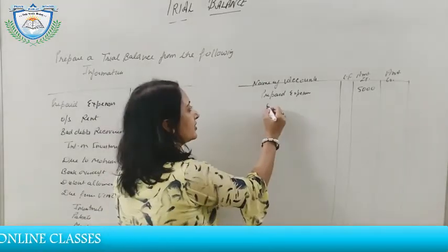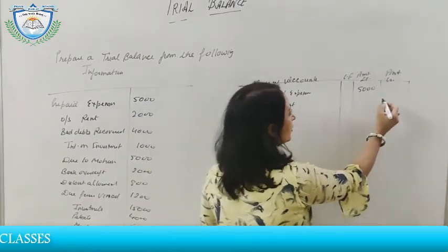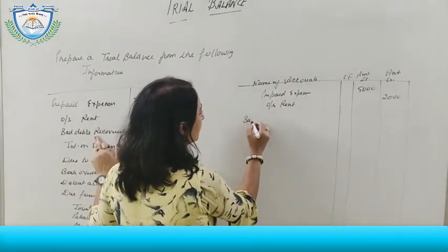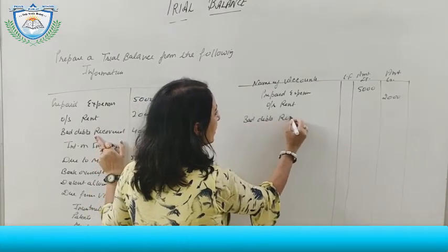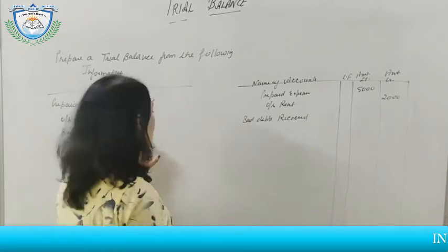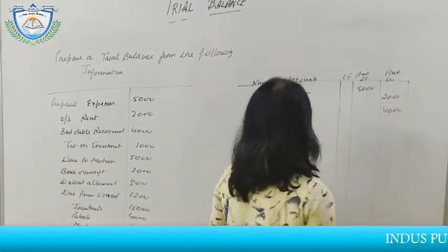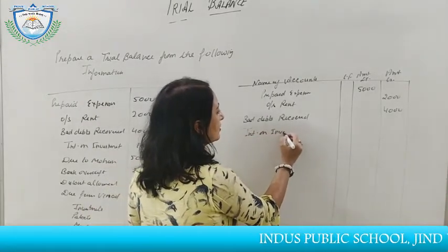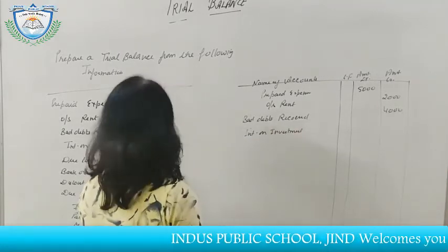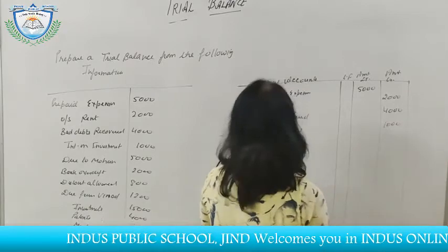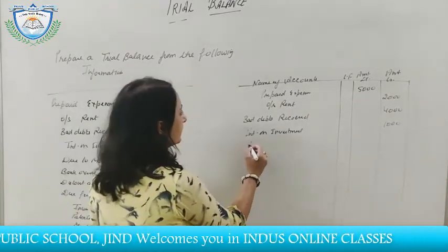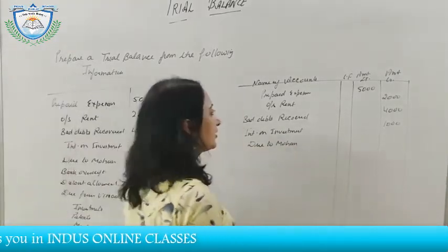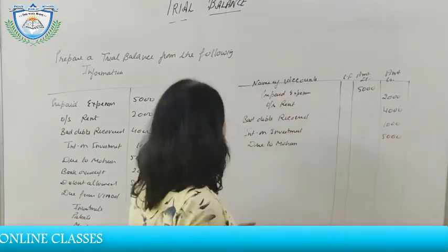Bad debts recovered — money that was previously lost is now recovered, so it is income. It is taken on the credit side, rupees 4,000. Interest on investment — also income, taken on credit side, rupees 1,000. Due to Mohan — we owe money to Mohan, so treated as creditors, credit balance, rupees 5,000.